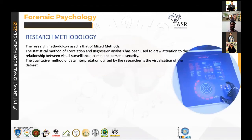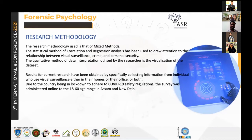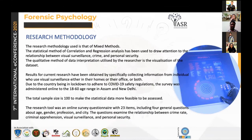The research methodology used is that of mixed methods. A statistical method of correlation and regression has been used to see the relationship between personal security and visual surveillance, and a qualitative method has also been used in the form of visualization of the data set. Data was specifically collected from people who use visual surveillance either in their homes or office or both. Due to the country being in lockdown during COVID, the study was administered online to an 18 to 60 age range in Assam and New Delhi.